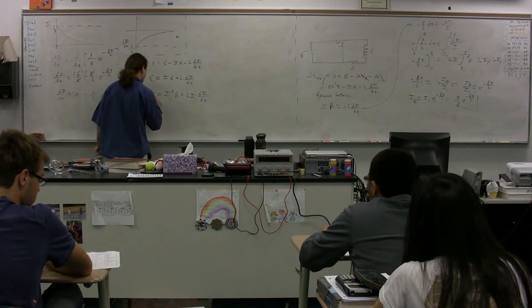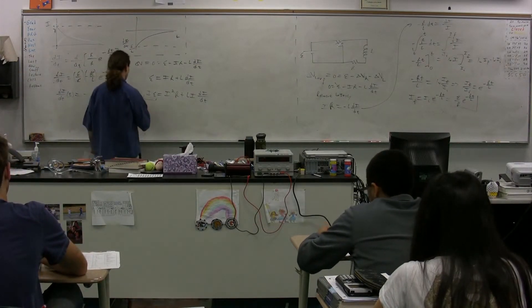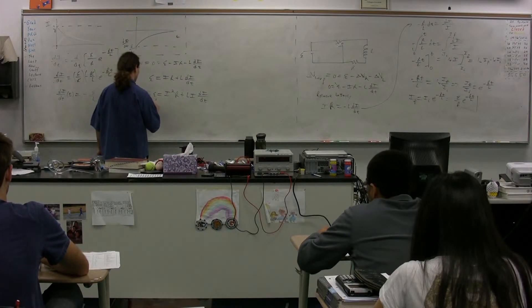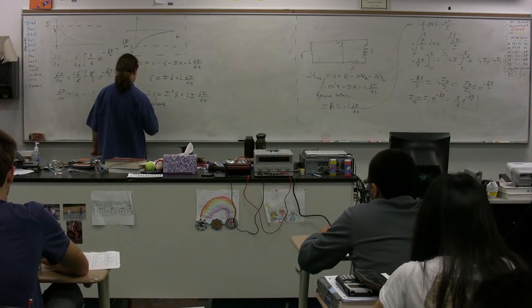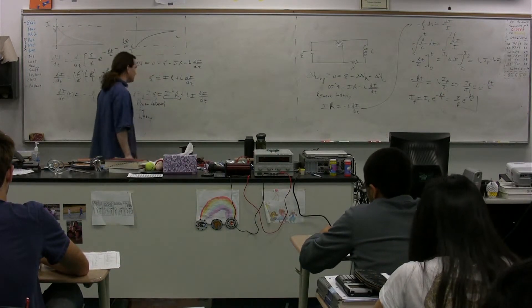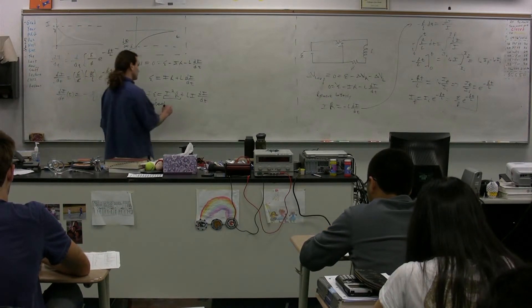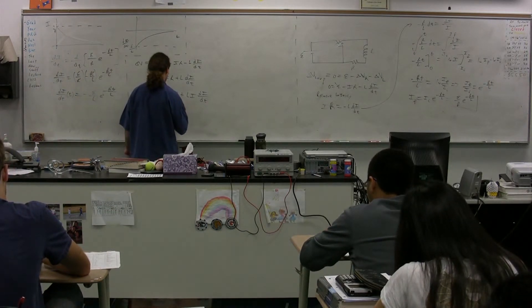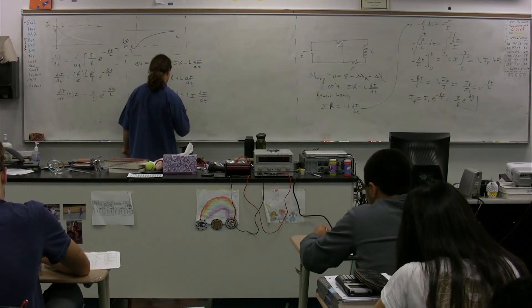This is the rate at which energy is being delivered by the battery. So this is the power delivered by the battery. This is the rate at which energy is being dissipated by the resistor. So this is the power dissipated by the resistor.